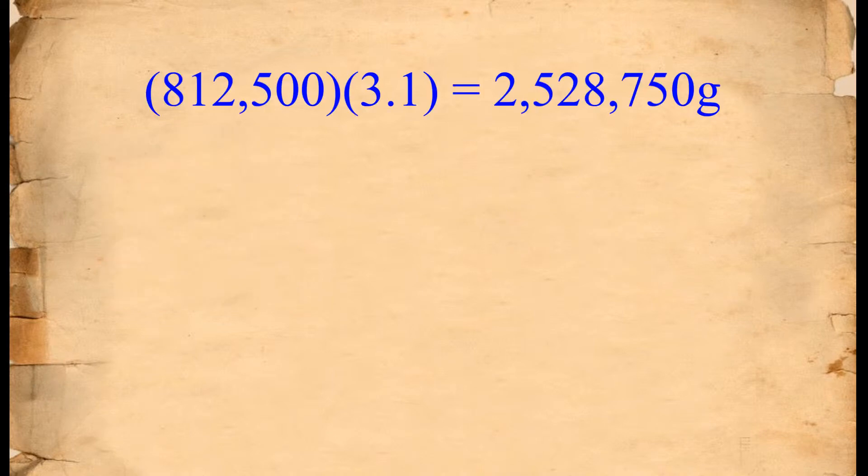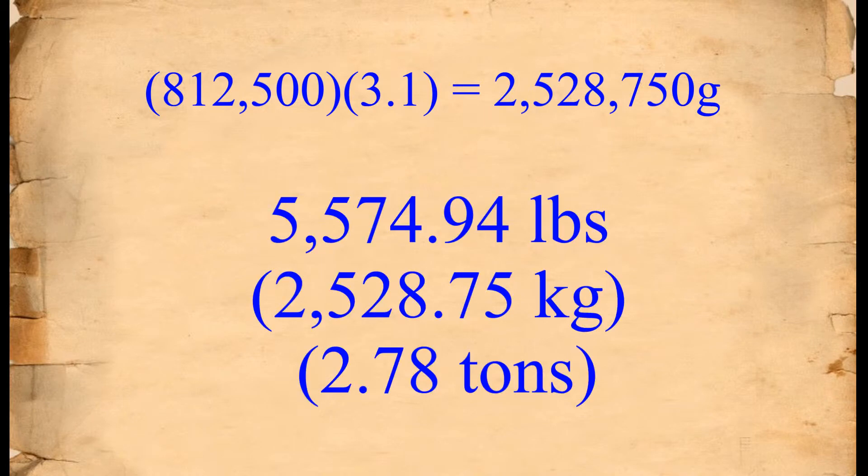One cubic centimeter of lava equals about 3.1 grams. Multiplying the volume by 3.1 gets us 2,528,750 grams or about 5,574 pounds.